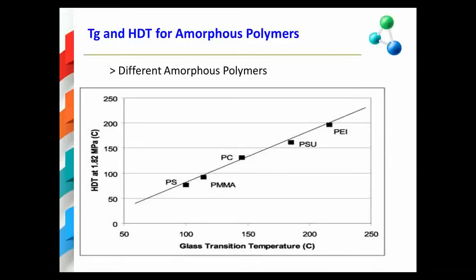This slide contains data from the polymer literature relating HDT versus Tg for some common amorphous polymers. In the case of these data, Tg has been defined by the peak in tan delta, not from the E prime changes. You can certainly see from the straight line analysis performed on this slide that there is a very good correlation between the Tg measured by DMA and the HDT values measured for these various amorphous polymers. However, it does need to be noted that the Tg values are higher than the HDT values. In my opinion, this further reinforces the recommendation for using the decrease in E prime as a general predictor of HDT values.